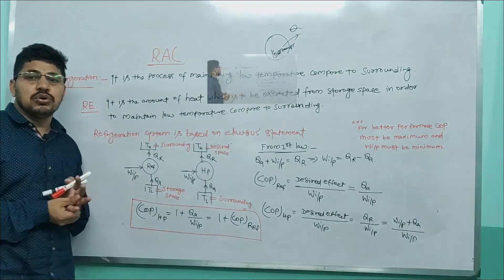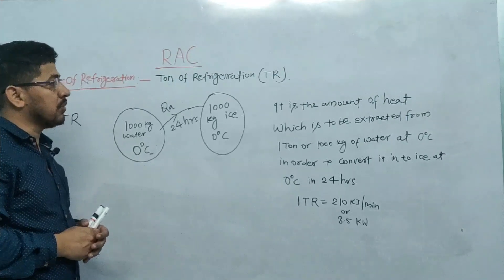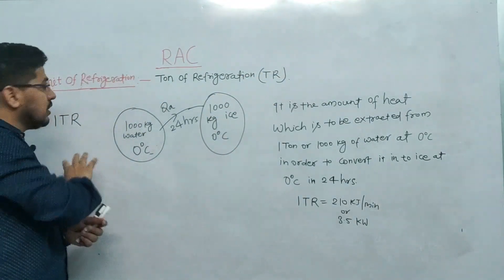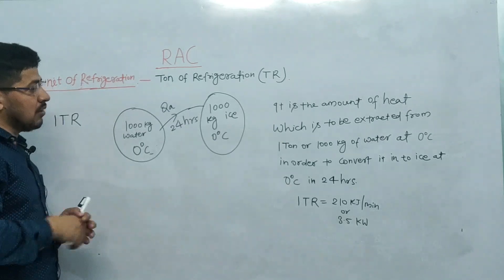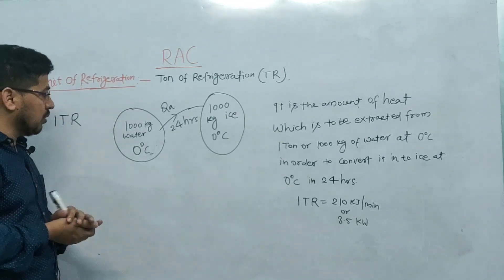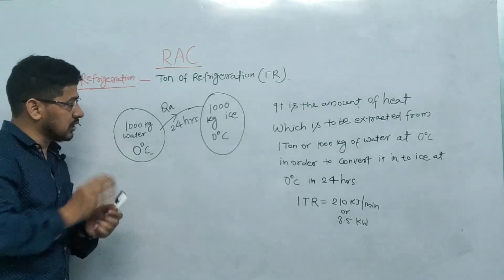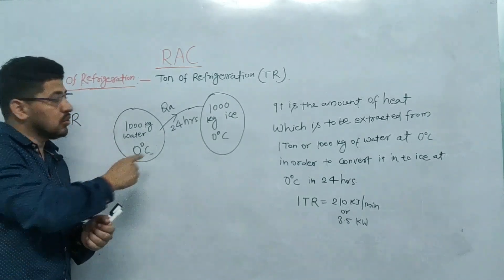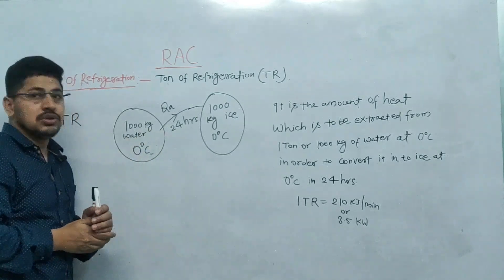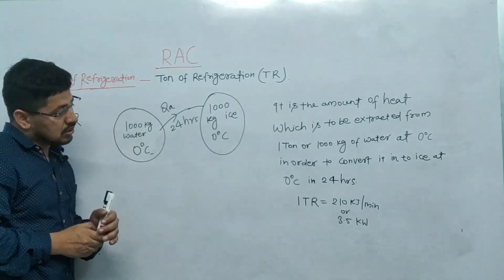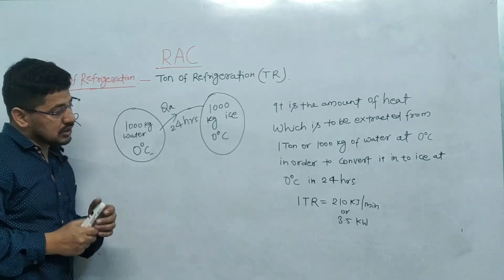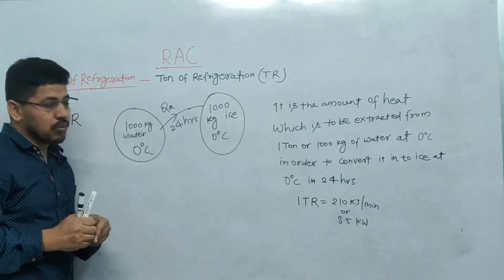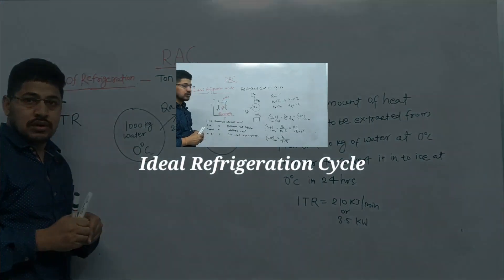Unit of refrigeration is ton of refrigeration, denoted as TR. One ton of refrigeration is defined as the amount of heat which is to be extracted from 1 ton, that means 1000 kg of water at 0 degree Celsius, to convert it into ice at 0 degree Celsius in 24 hours. The value of 1 ton of refrigeration is 210 kJ per minute or 3.5 kW.